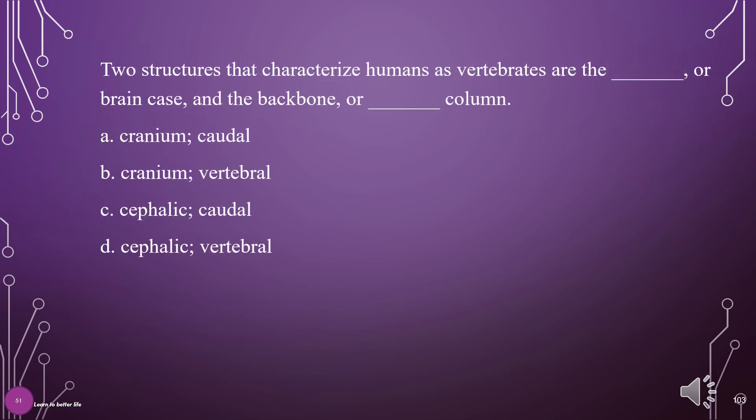Two structures that characterize humans as vertebrates are the what, or brain case, and the backbone, or what column? A. Cranium, caudal; B. Cranium, vertebral; C. Cephalic, caudal; D. Cephalic, vertebral. The answer is B: Cranium, vertebral.